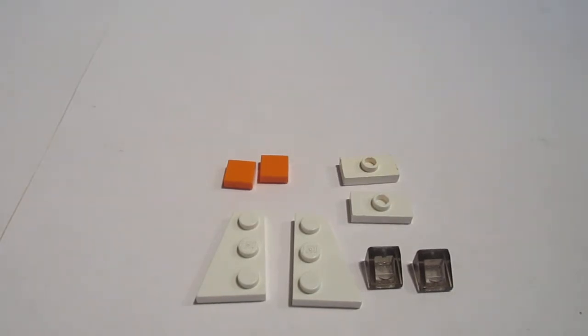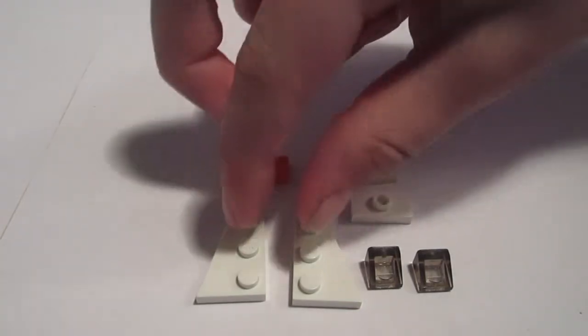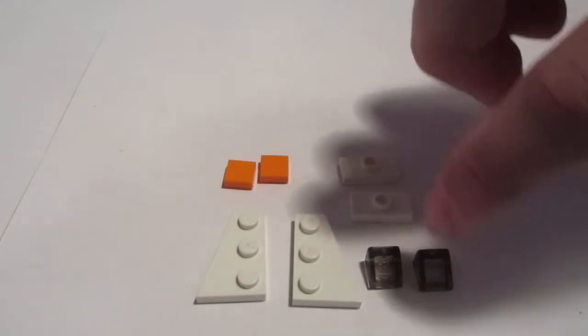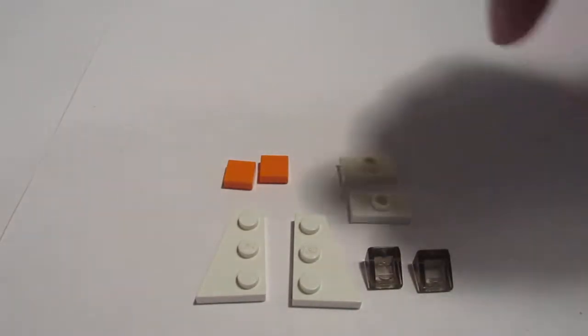So as you can see the pieces here, I'm going to go ahead and name them. This only takes about ten pieces. You're going to need two white jumper plates, two one by one flat orange tiles, two one by three wing pieces that are opposite to each other, and then two of these cheese slope pieces that are kind of clear.